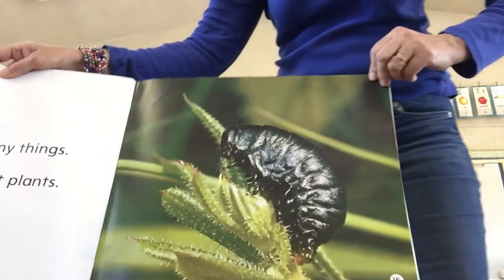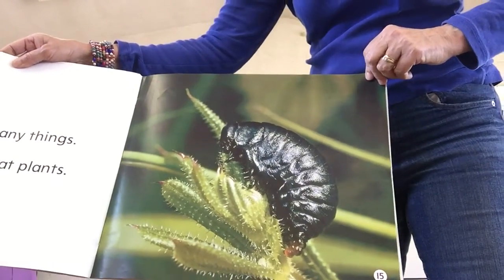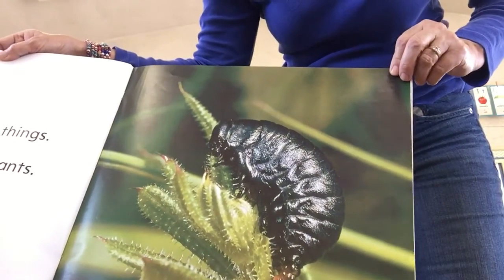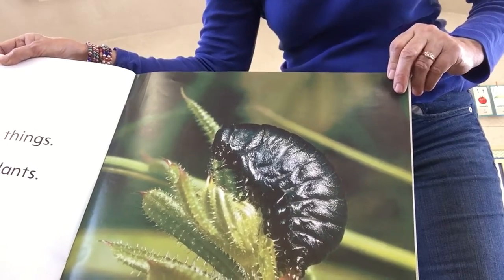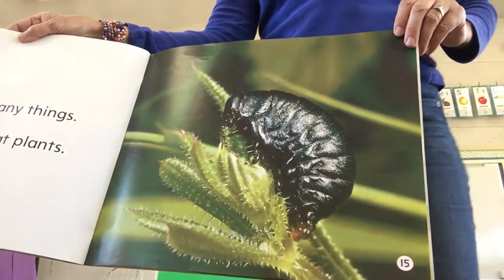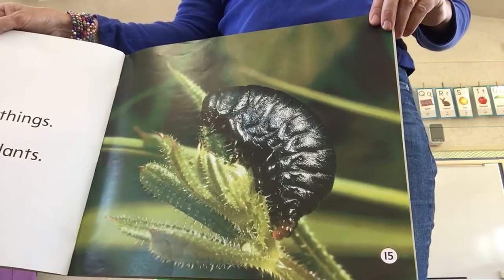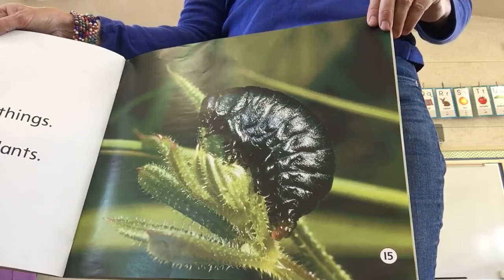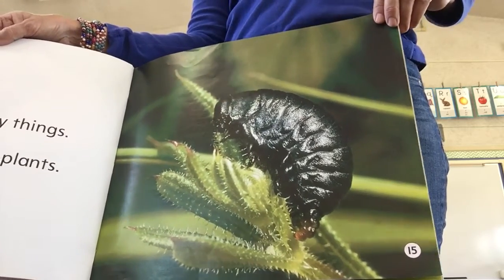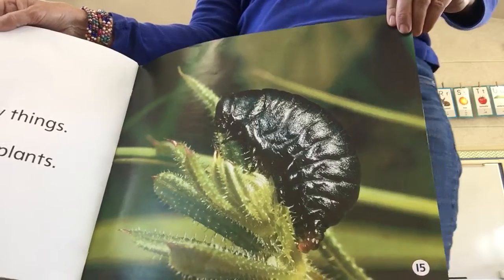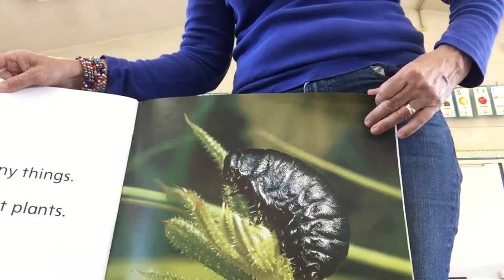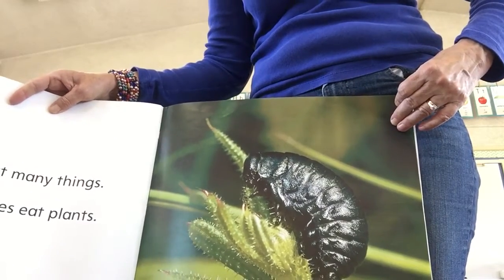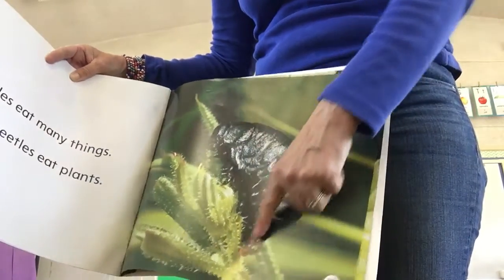Beetles eat many things. Many beetles eat plants. You might think that doesn't look like a beetle, but that is a stage — the larva stage. And if you look on our Google Classroom, you'll see that Jane Jane had posted that she's going through the cycle of ladybugs. So they'll go from a larva to a pupa, to the actual beetle. That is a stage.